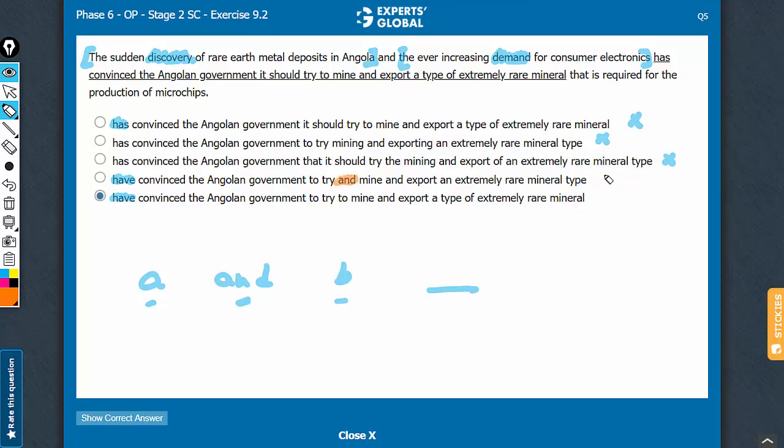To try and do something is idiomatically incorrect. To try to do something is the correct idiomatic construction. Besides, remember, whenever it is about an intent of action, the infinitive verb form, the to-plus-verb form, is the preferred usage.